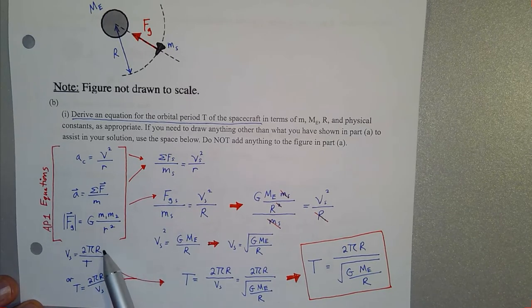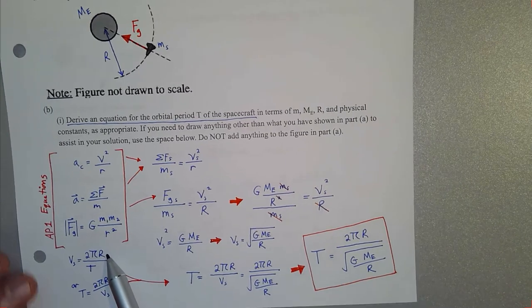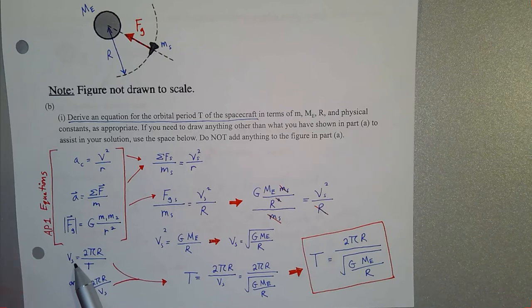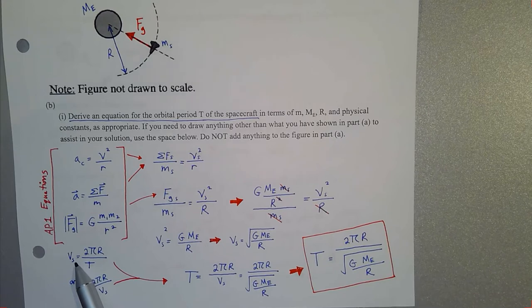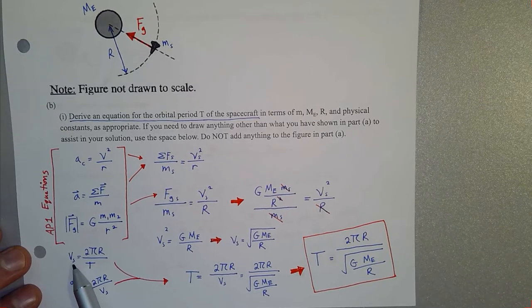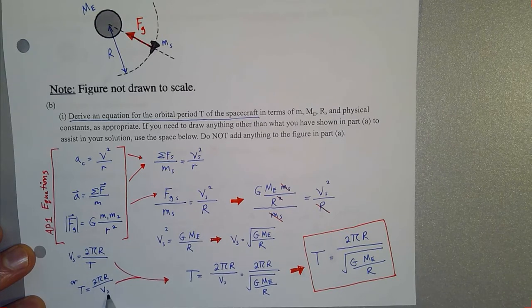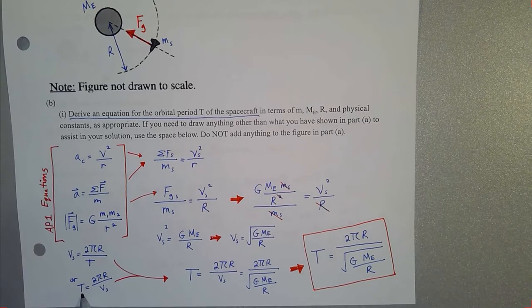We're allowed to use R (the orbital radius) and π as a constant. So period equals 2πR divided by the orbital speed. We just need an expression for how fast the spaceship is traveling in its circular orbit — call that V sub s. If we can get that expression and plug it in here, we'll have our expression for the orbital period.